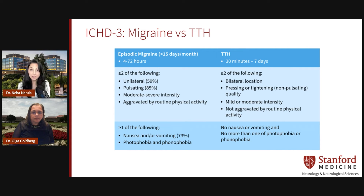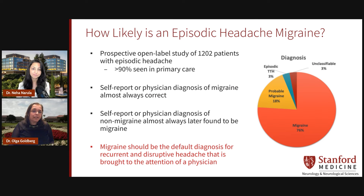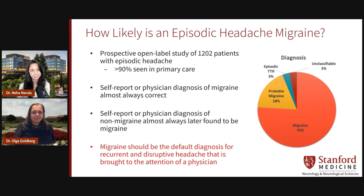I get many patients who have a hard time believing they have migraines and attribute their headaches to sinusitis or other causes. How likely is an episodic headache a migraine? There's a landmark study by Tepper and colleagues which found that if a patient or physician diagnoses migraine, they're right about 99% of the time. If a patient or physician diagnoses a headache as not a migraine, they're wrong 85% of the time. That is really fascinating — very high percentages in both diagnosing correctly and incorrectly. So how do I, as a PCP, increase my diagnostic accuracy with migraine headaches?